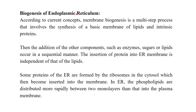Regarding the biogenesis of the endoplasmic reticulum — how does the ER originate? According to current concepts, membrane biogenesis is a multi-step process involving the synthesis of basic membrane lipids and intrinsic proteins. Since these are components of the endoplasmic reticulum, they are also made in the ER. Then other components such as enzymes, sugars, and lipids are added sequentially. The basic layer becomes a phospholipid bilayer, and then proteins are inserted independently of lipid synthesis. In the ER, phospholipids are distributed more rapidly between the two monolayers than in the plasma membrane.